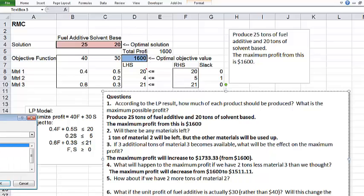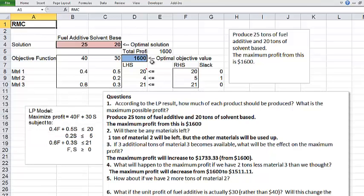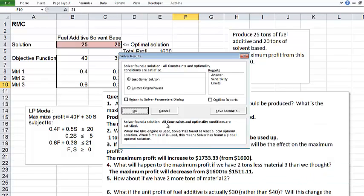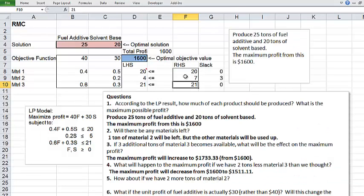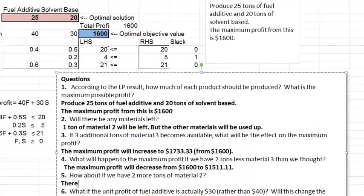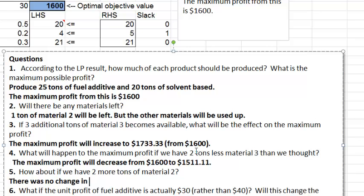So make a copy of the sheet again. Here I'm on the new sheet. And I'm going to change material 2's available number from 5 to 7. OK. Did anything change? Nope. Still the same optimal solution and the same profit. So getting more of the material 2 really was useless as we expected. So again, back to the original sheet and I'm going to write down the answer. There was no change in the profit or the solution.